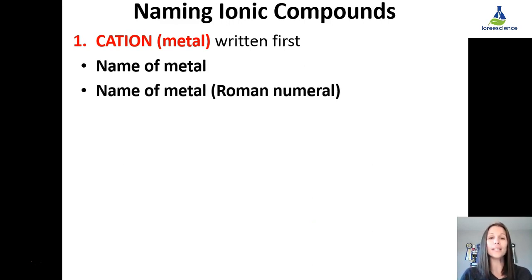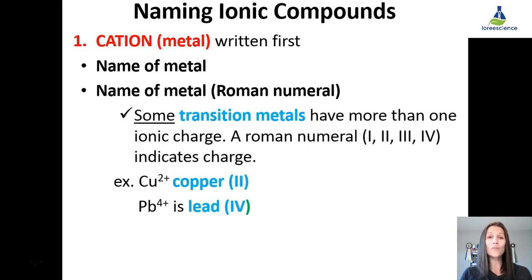Some metals will need a Roman numeral after it, because some metals have several different charges they could take. They are known as multivalent. A Roman numeral will indicate the charge, whether it is a plus one, two, three, or four charge. Copper two would be written as copper, Roman numeral two. Lead four plus would be written as lead IV.